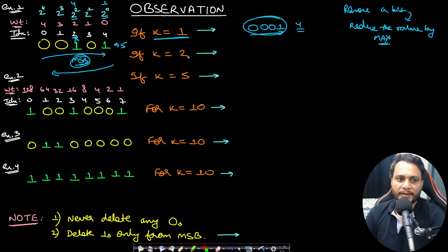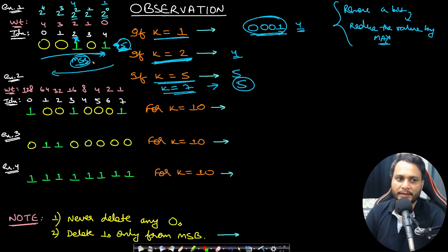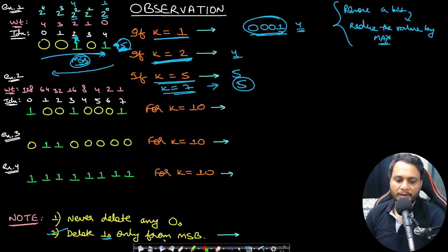Removing the second-position bit gives '0001', which is less than or equal to k=1. The length is 4, so the answer is 4. If k=2, the number 5 is still greater than k, so remove the second bit to get '0001' (value 1 ≤ 2), length 4. If k=5, the value already equals k, no removal needed, length 5. If k=7, value 5 < k, no removal needed, answer is 5. This confirms we reduce from left to right for maximal value reduction with minimum bits removed.